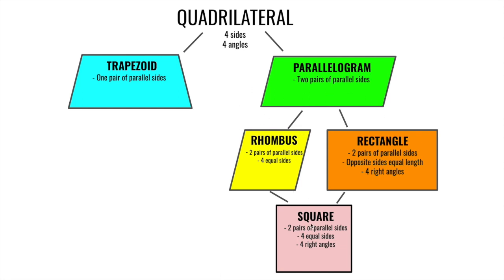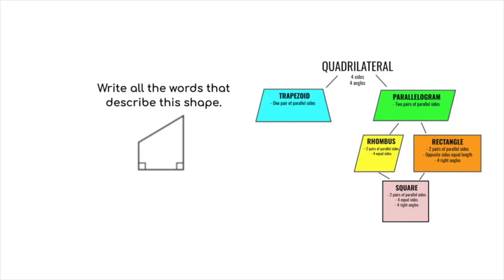Now let's practice classifying quadrilaterals using the chart. Looking at the given shape, we first ask: is there one pair or two pairs of parallel sides? Highlighting the sides, we can see this side is parallel to this side, but the other two sides — if extended — will eventually touch. There is only one pair of parallel sides, so the only word that describes this shape is trapezoid.